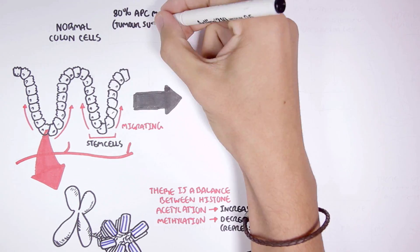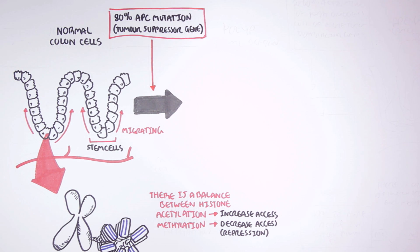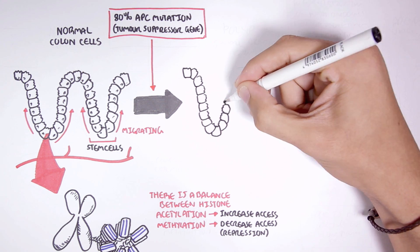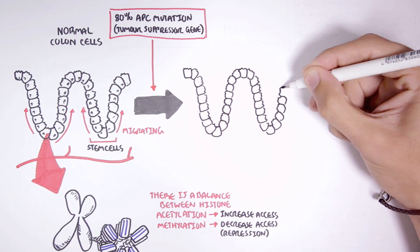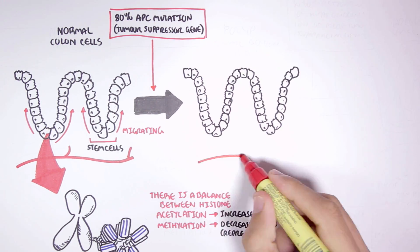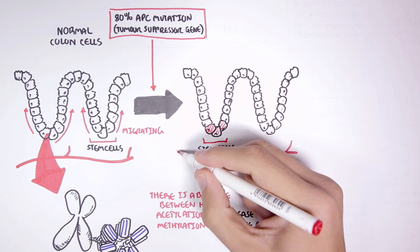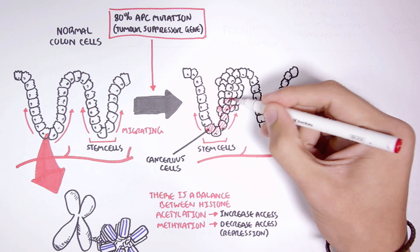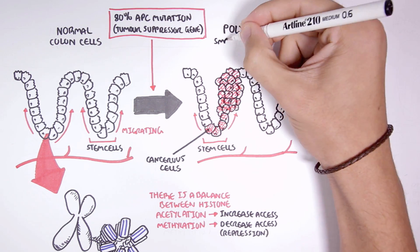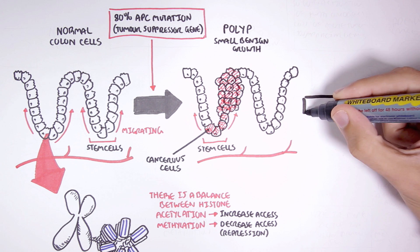Now in 80 percent of cases of colon carcinogenesis there is an adenomatous polyposis coli gene mutation or APC gene mutation. The APC gene is essentially a tumor suppressor gene because normally it encodes for proteins involved in cell adhesion and transcription. This APC gene mutation can result in one of these stem cells becoming potentially cancerous. As the abnormal cell, the potential cancer cell, moves up, it will begin dividing and dividing, creating a polyp, which is usually a small benign growth.